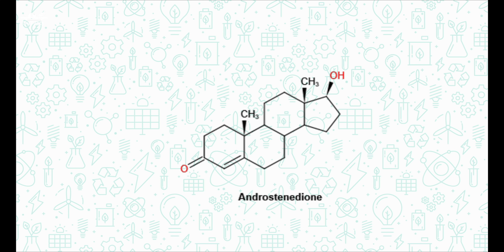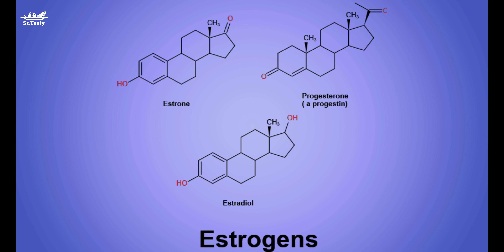Androstenedione is also a precursor of testosterone and other androgens. In addition to functioning as an endogenous pro-hormone, androsterone also has weak androgenic activity in its own right. The two most important female sex hormones are estrone and estradiol. Female sex hormones are also called estrogens, and they are synthesized in the ovaries from testosterone.